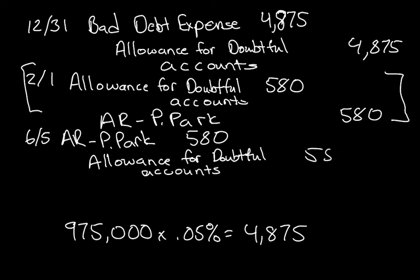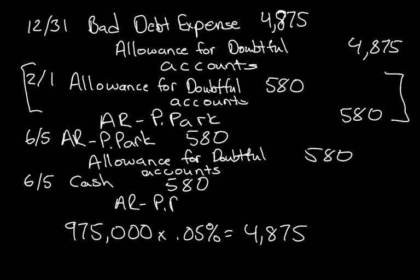Then the second transaction, we're going to account for the cash that was received for the account. So we're receiving $580 in cash, and we're going to settle that account. Any time a client settles their bad debt, it must be in cash. So that transaction will always be cash.